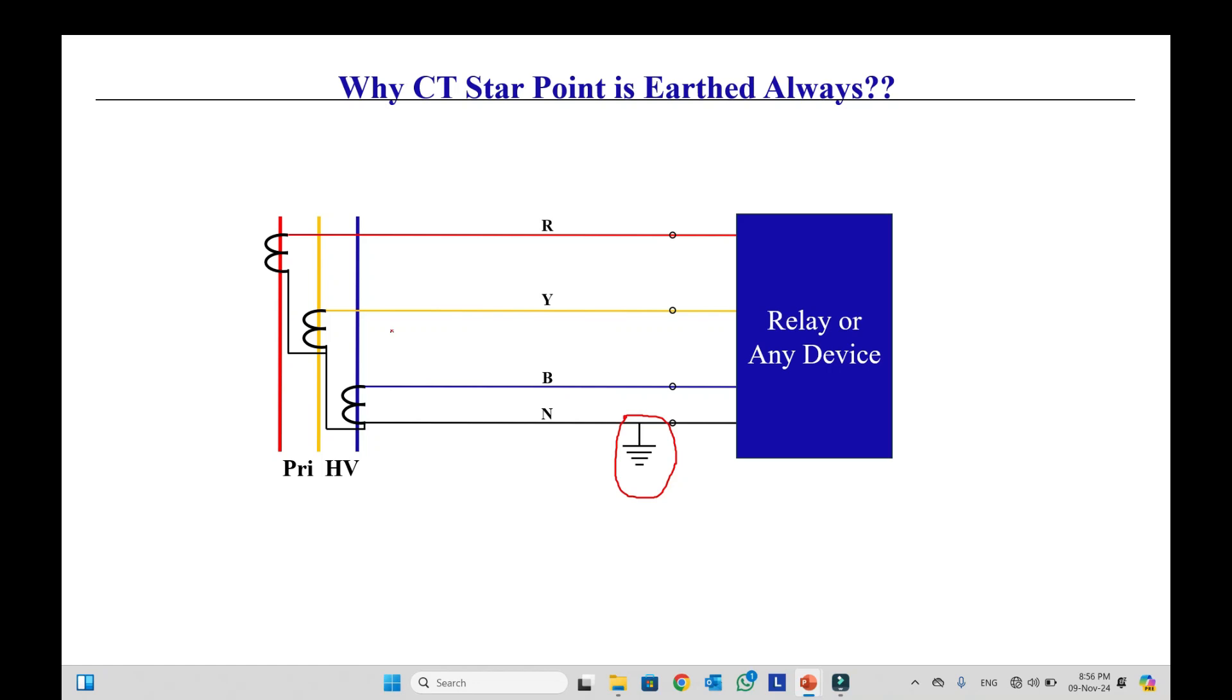So we have one common question every people ask about this earth. Will this star point earthing affect the protection? For example, protection or metering. If we remove this star point, if we remove this earth, what will be the effect on the protection or any metering? So the answer to this question is no.